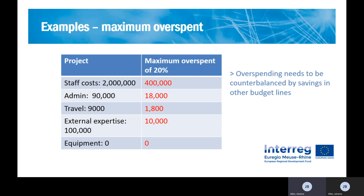Looking at external expertise: 20% of 100,000 is 20,000, so you might go up to 120,000 on the external expertise budget line. However, it's important to notice the equipment budget line — this project didn't budget anything on equipment, so it has a budget of zero. 20% of zero is still zero, so the flexibility rule won't help you if you have any equipment expenditure. For that, you would still need to request a change.